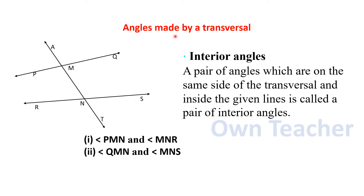Angles made by a Transversal. Now we will see interior angles. Between the two given lines, in the inner region along the transversal, the angles that are formed are called interior angles. A pair of angles which are on the same side of the transversal and inside the given lines is called a pair of interior angles.